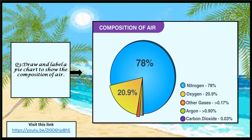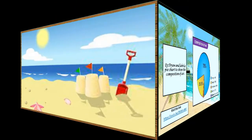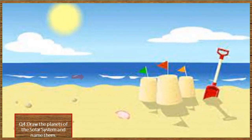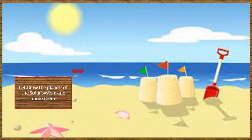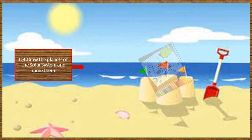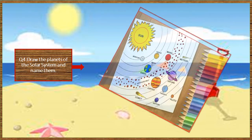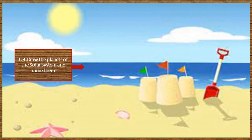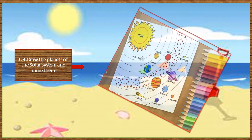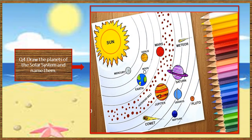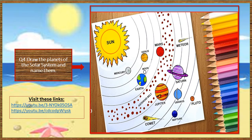Your project number four is to draw the planets of the solar system and name them. You can do it on paper, or you can make a 3D project. You can visit the links provided to get ideas, and you can make it more colorful using different colored papers. It is up to you how you make it more colorful and fantastic to see.